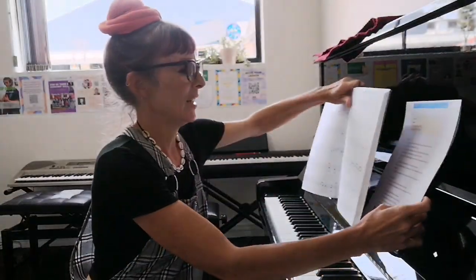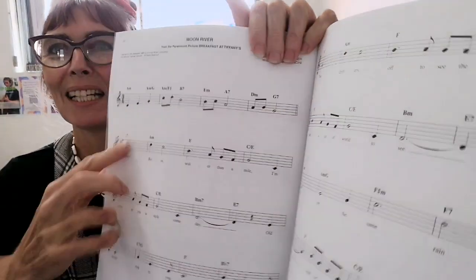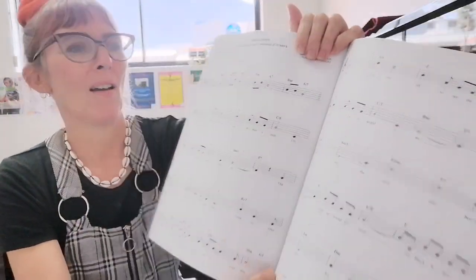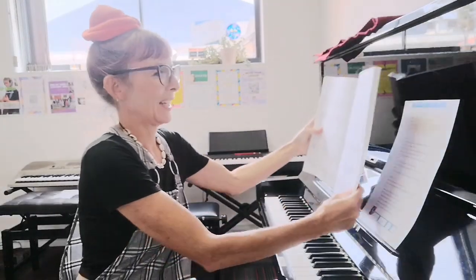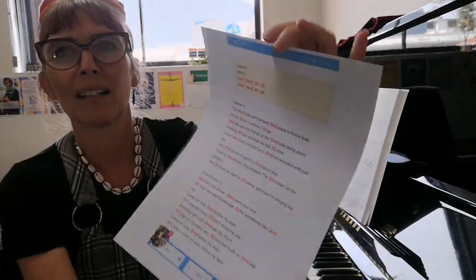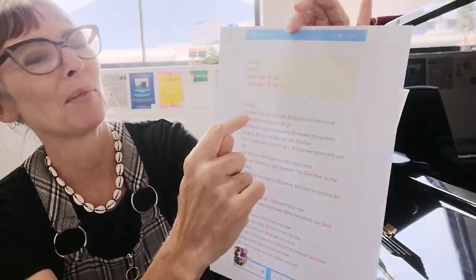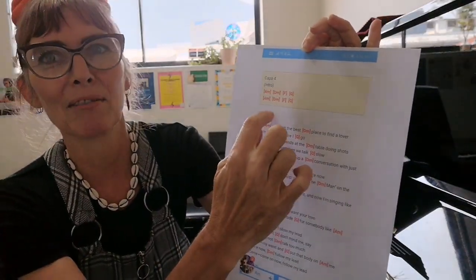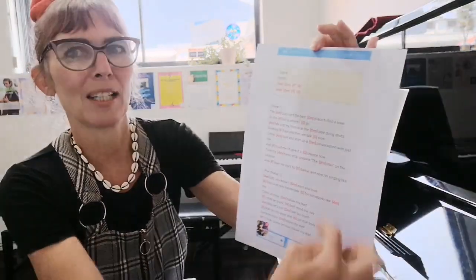A lead sheet will give you the melody as well as the chords on top, but often you can't find those on the internet. They'll either have it like this with the chords in red before the word you're supposed to play them with, or sometimes they have it written on top with double spacing.